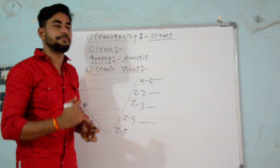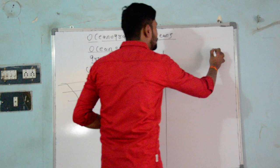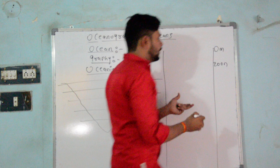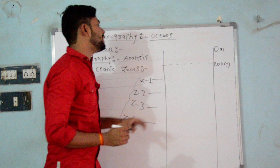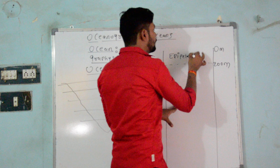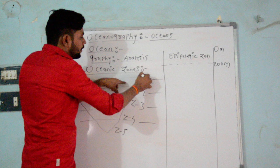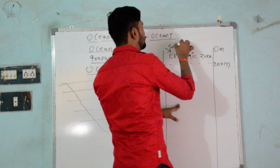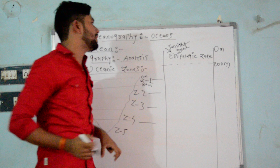Vertically, the ocean is bifurcated into different zones. Number one: in between 0 meter to 200 meter, we call it the epipelagic zone. The epipelagic zone is nothing but the sunlight zone. So, the epipelagic zone is also known as the sunlight zone.